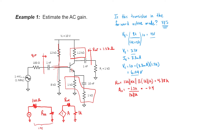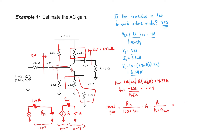We have everything we need to calculate the gain. We first have our input voltage divider, then our gain segment, and then our output voltage divider. When we plug in all of the numbers, we find that the gain is approximately minus 1.07. I said earlier that by inspection I expected it to be roughly negative 1, and it was accurate.